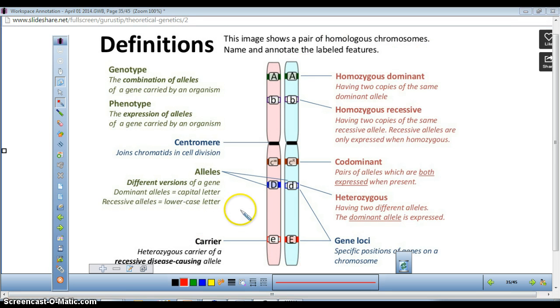Now let's look at a definition of all of the different structures that are found on homologous chromosomes.